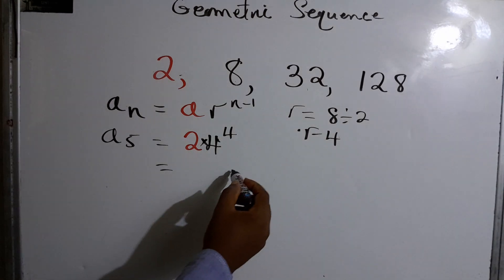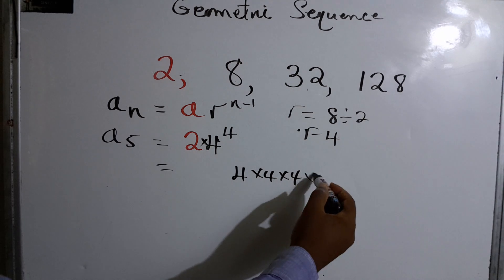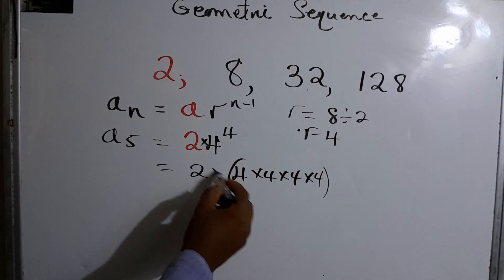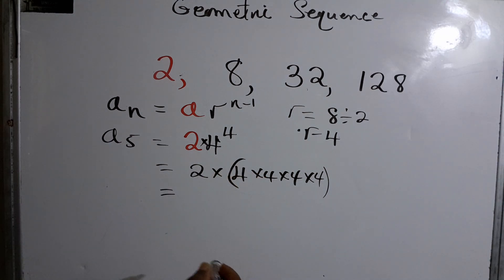And of course we know what the BODMAS rule says. We have to do the power part first. So what we do is four multiplied by four multiplied by four, and then we times all of this by two, and that should give us the fifth term.